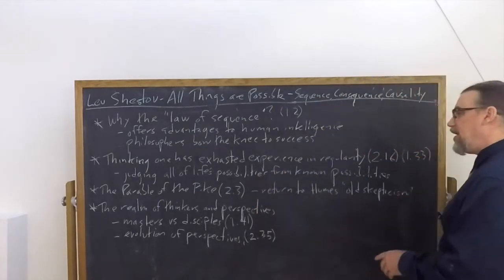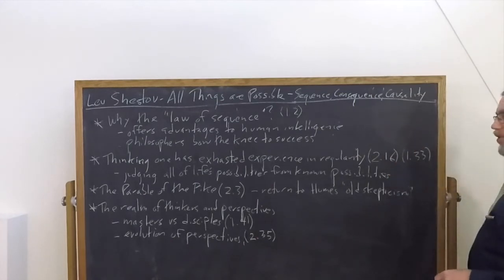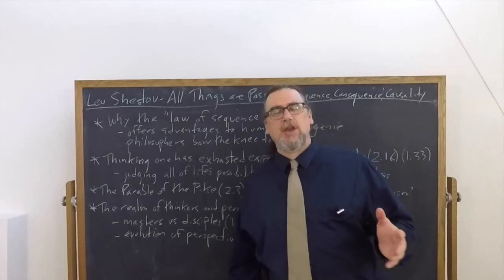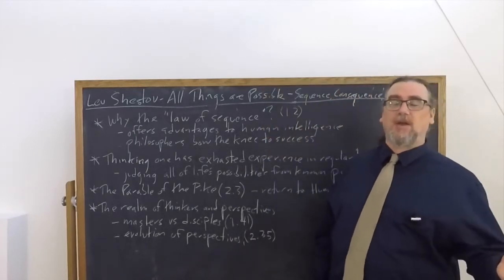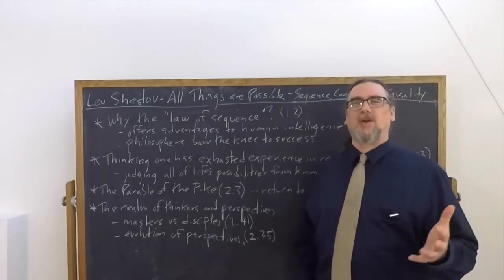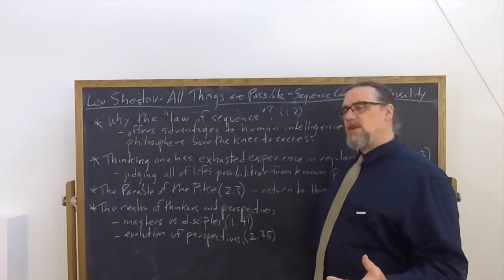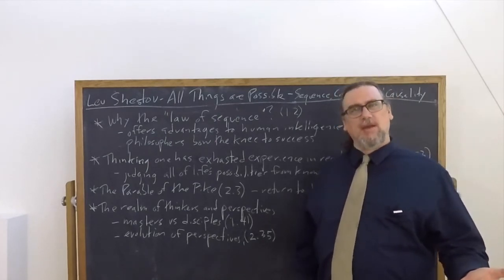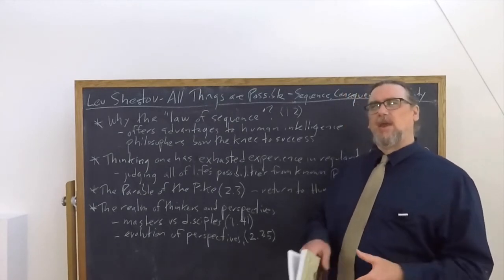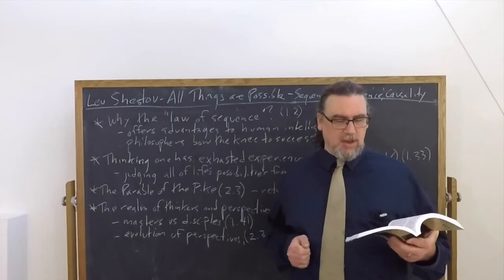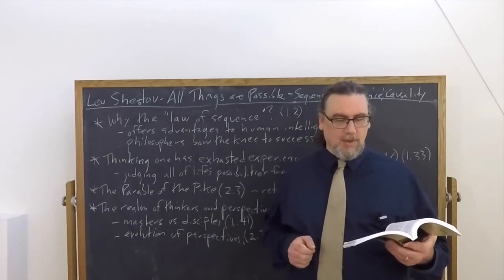And then he suggests in this case we should return to David Hume's old skepticism. David Hume said, first of all, that causality didn't really exist as such. And then he also said that if we can imagine things differently, they could be differently. There's a possibility. We can't say with necessity that anything experiential must be the way it is.